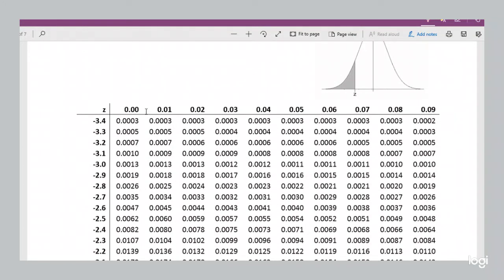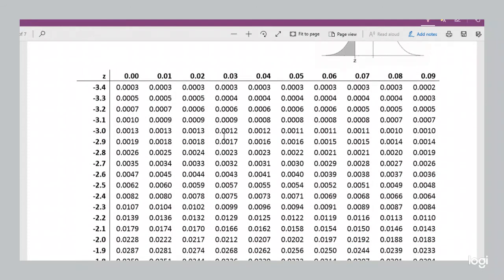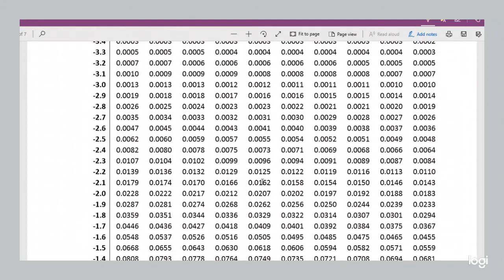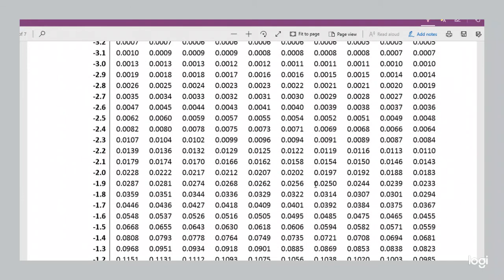There's our z table here. And we look for the probability that's closest to 0.025. Lucky for us it's right here precisely, 0.025.